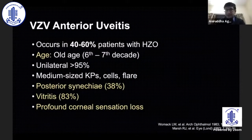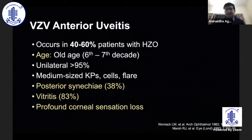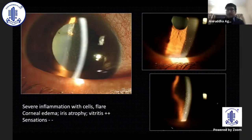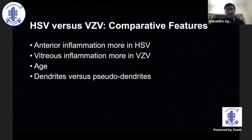Varicella is different and more severe. It tends to affect older patients — sixth or seventh decade of life — and unilaterality is generally more than 95%. Most of these patients will have vitritis and profound corneal sensation loss. The inflammation is much more severe compared to simplex virus, with edema, vitritis, and diffuse iris atrophy. To compare: anterior inflammation is more common in HSV, while vitreous inflammation is more common in VZV.